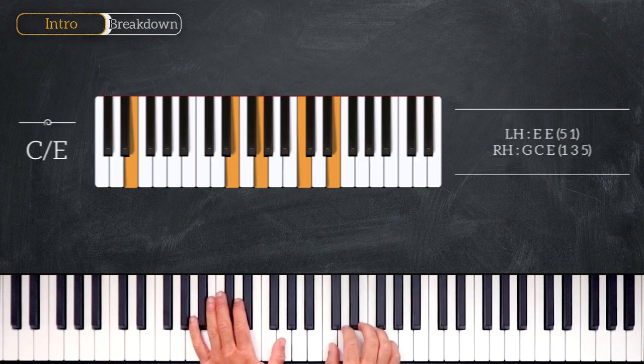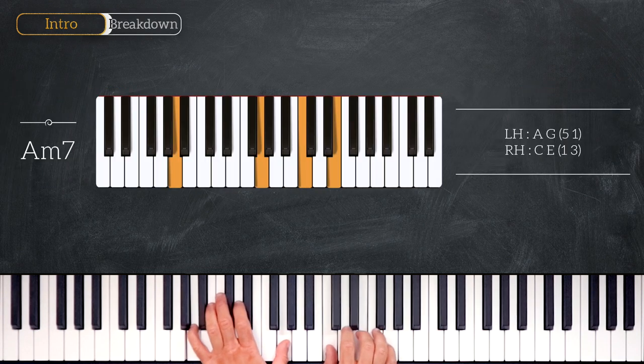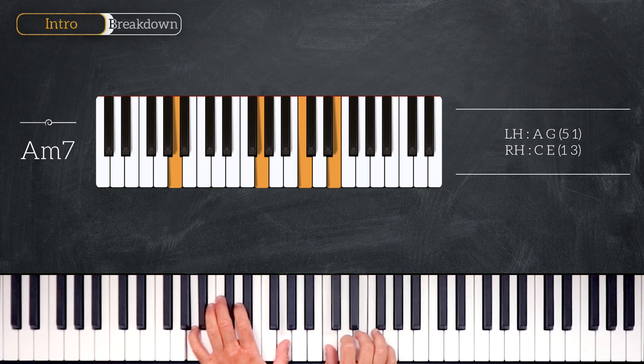Right after we'll play this A minor 7, playing A, G on the left hand and C, E on the right hand.